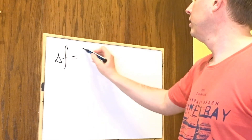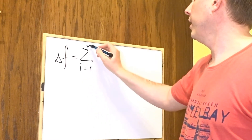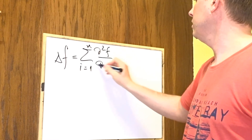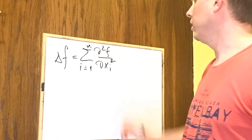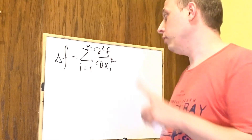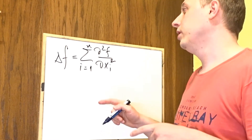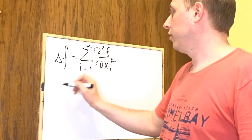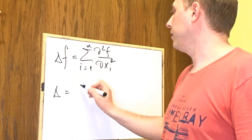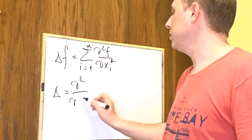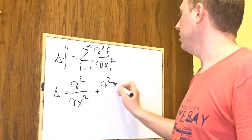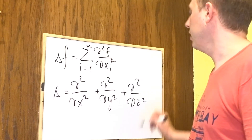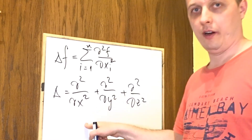Here is the well-known Laplacian operator. It looks like d²f/dxᵢ². The question is: how do you transform or rewrite that operator from Cartesian coordinates — which looks like d²/dx² + d²/dy² + d²/dz² — into spherical coordinates?